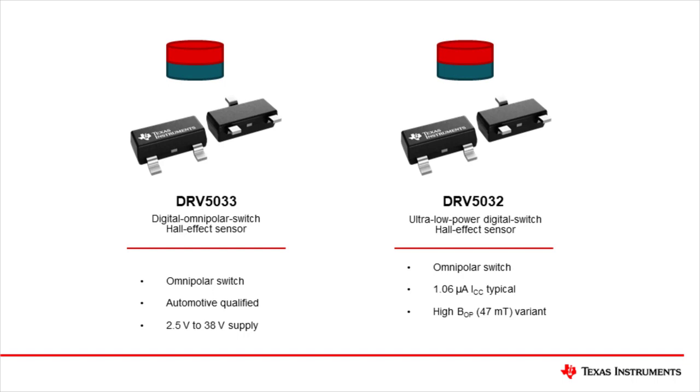DRV5032 is a low power part with a typical 1.06 microamp supply current and offers multiple sensitivity variants, including one with an operating point as high as 47 militeslas.